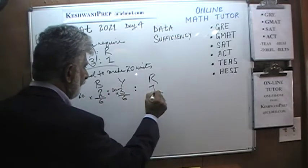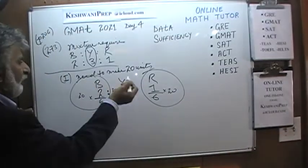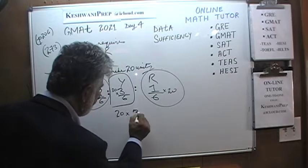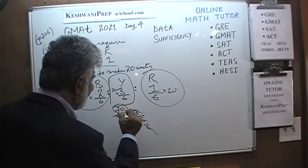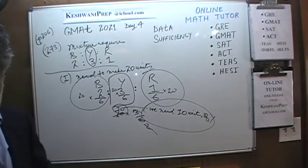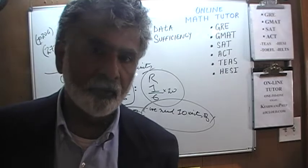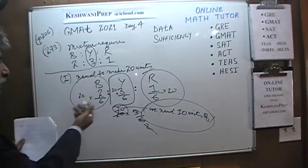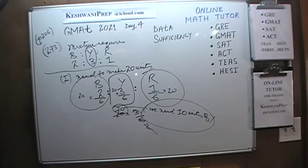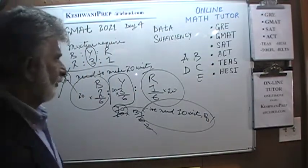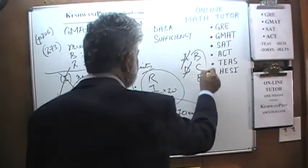We need 10 units of yellow, but there is nothing in the first statement telling us how much yellow we actually have. So we cannot determine if we have enough. The first statement by itself is not enough. Since the first statement is not sufficient, the answer cannot be A or D — it has to be B, C, or E.